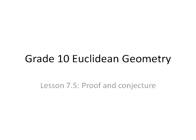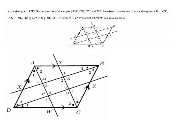Let's take a look at an example where we use our rules for geometry to prove a relationship in a rider. In parallelogram ABCD, the bisectors of the angles have been constructed. A bisector is a line that cuts either another line or an angle in half, cutting the two things into two equal parts.